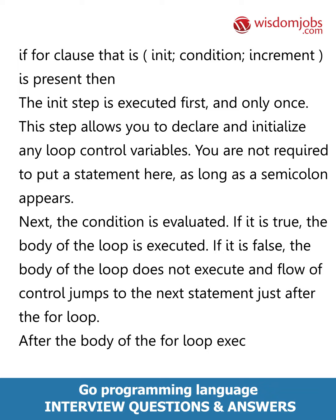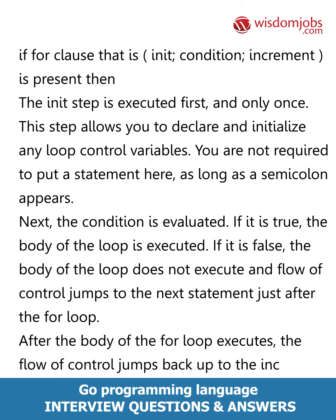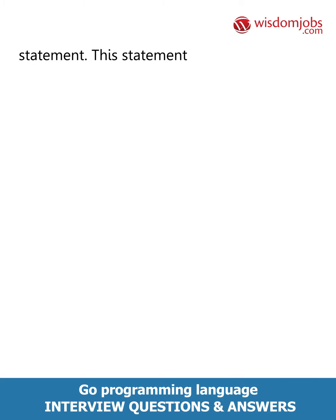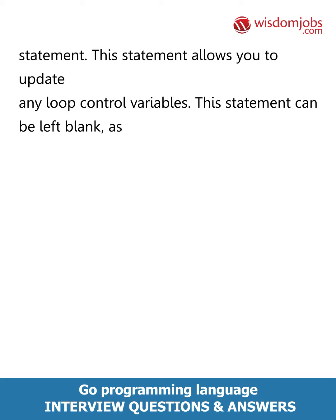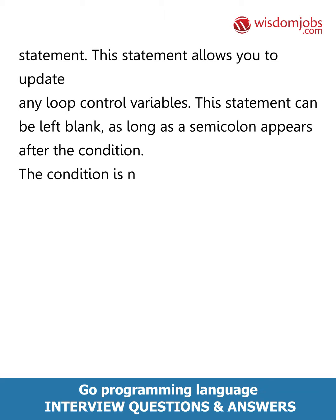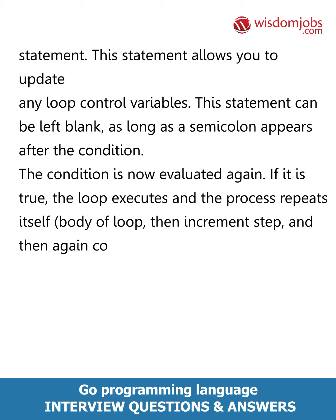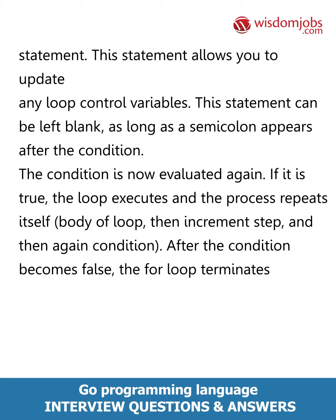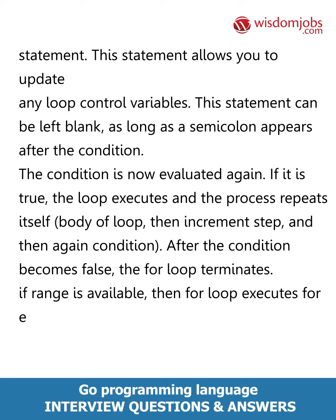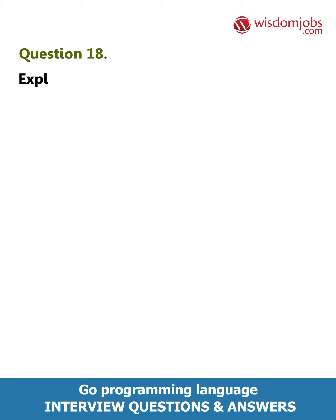After the body of the for loop executes, the flow of control jumps back up to the increment statement. This statement allows you to update any loop control variables and can be left blank as long as a semicolon appears after the condition. The condition is now evaluated again — if it is true, the loop executes and the process repeats: body of loop, then increment step, then condition again. After the condition becomes false, the for loop terminates. If range is available, the for loop executes for each item in the range.